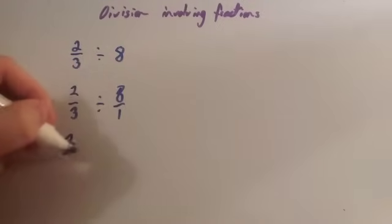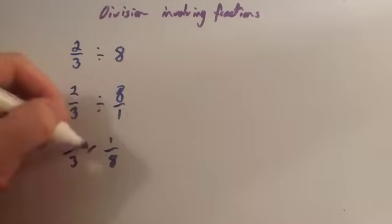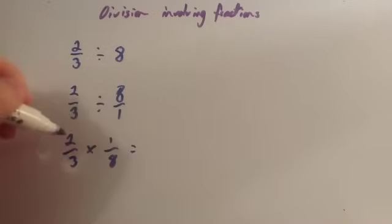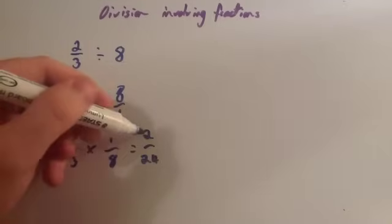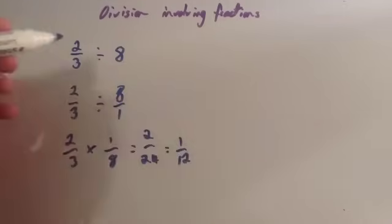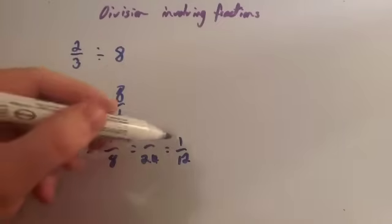So it's going to be two thirds, and that's going to be 1 over 8. I'm going to flip it over, and I'm going to change the divide to multiply. You'll need to change to multiply whenever you flip over the second fraction. 2 times 1 is 2, 3 times 8 is 24. So that's 2 twenty-fourths. That can be cancelled down to 1 over 12. So 2 thirds divided by 8 is 1 twelfth.